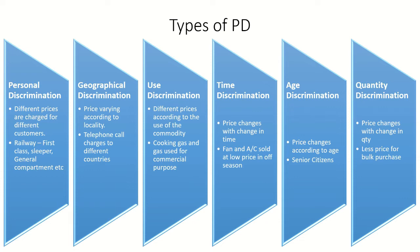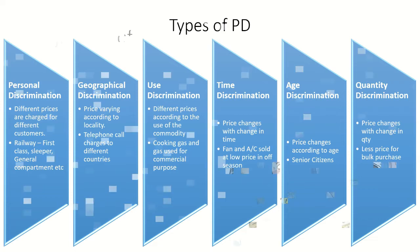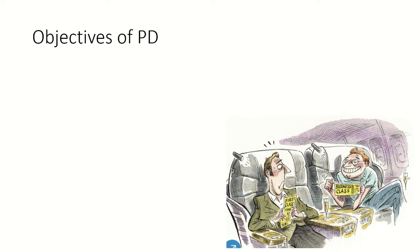To summarize the types: personal discrimination means different prices for different persons; geographical discrimination means price varying according to locality; use discrimination means different prices according to use of commodity; time discrimination means price changes with time; age discrimination means price changes according to age; and quantity discrimination means price changes with quantity.